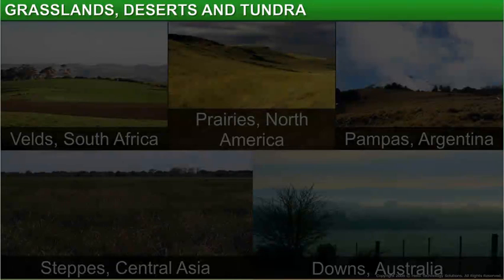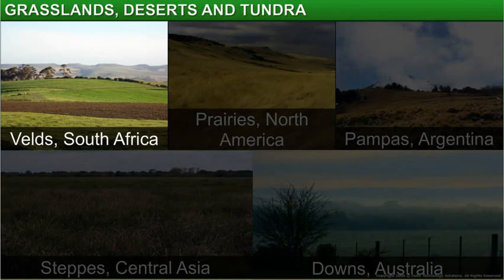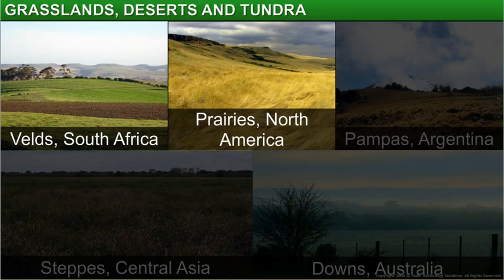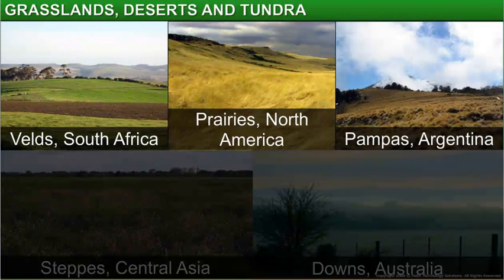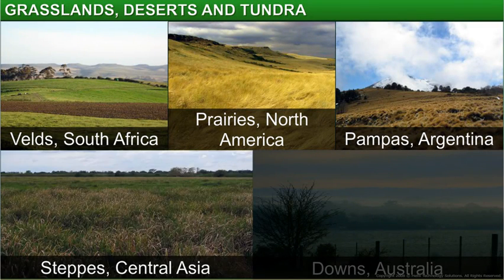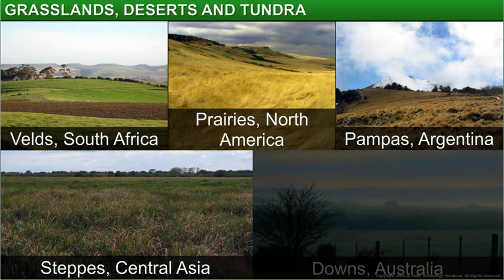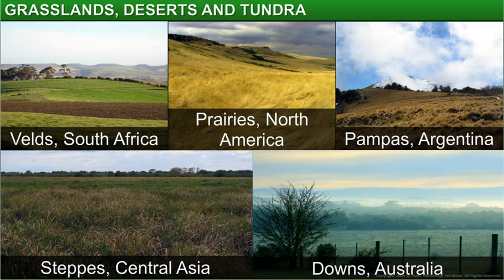The major temperate grasslands include the Velds of South Africa, the prairies of North America, the pampas of Argentina, the steppes of Central Asia, and the downs of Australia.